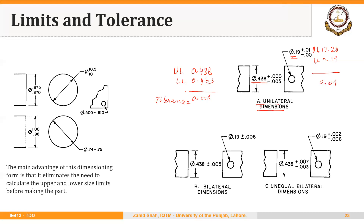In figure B, the basic size is again 0.438, but here the variation allowed is in both directions — plus or minus 0.005. So we can make the size equal to 0.443 on the upper side or 0.433 on the lower side. In this case the tolerance will be equal to 0.010 — the difference between upper limit and lower limit. The type of dimension here is a bilateral dimension: we can have variation on both sides of the basic size, and this variation is equal on the upper as well as the lower side.